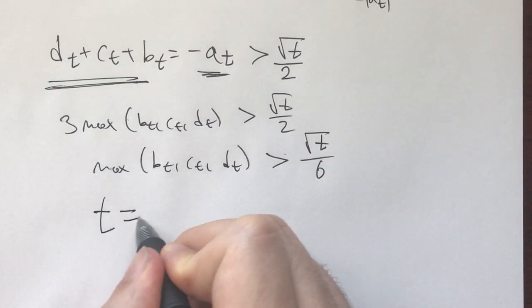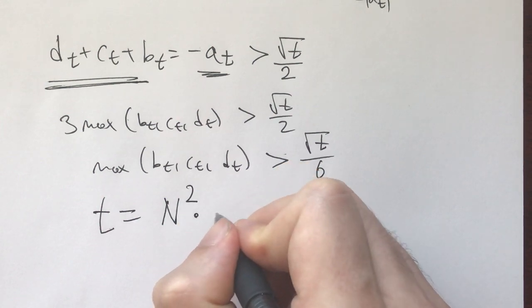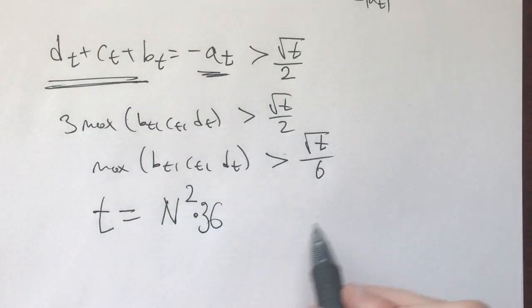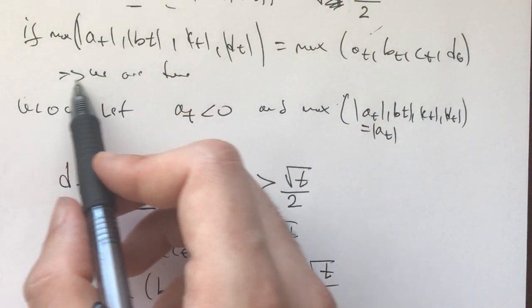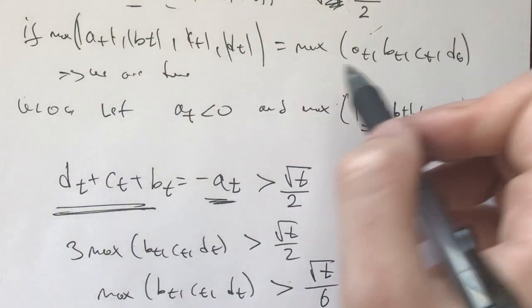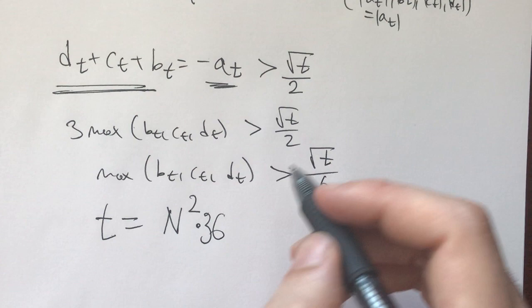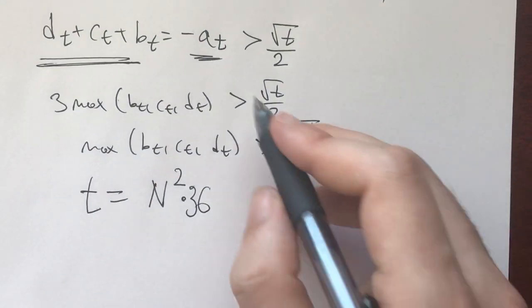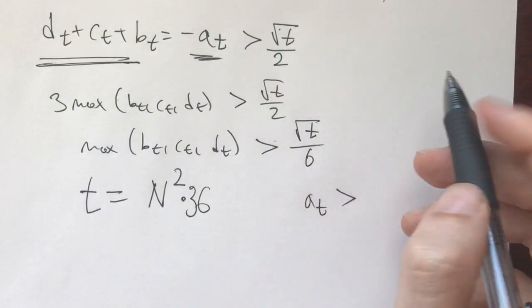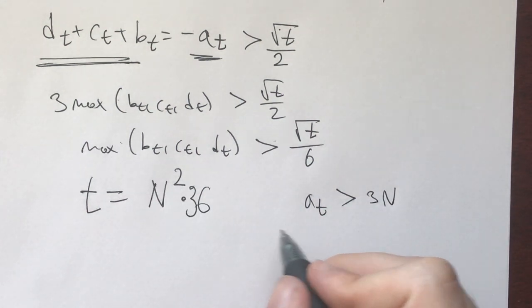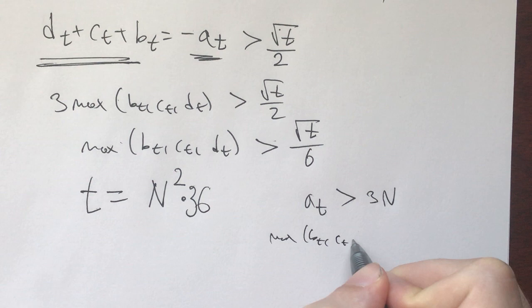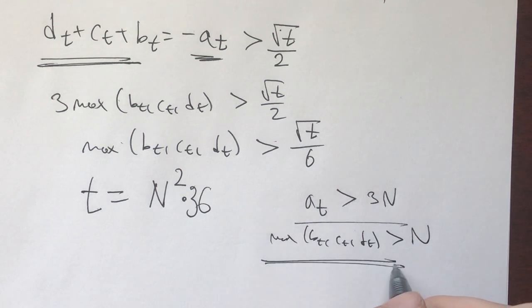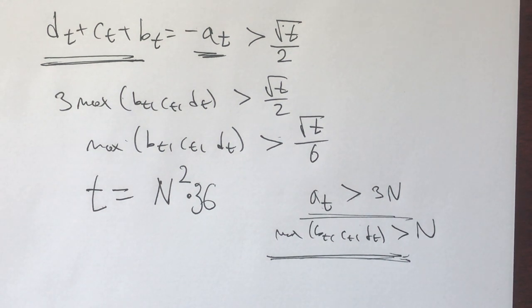Then, if the first case is true, if the largest one of these is a positive number itself, we are done, because then we have that at is greater than the square root of t over 2, which is 6n, greater than 3n. And in the second case, we would have that the maximum of bt, ct, dt is greater than the square root of this, greater than n. So, at the end, at least one of these numbers will become arbitrarily large.